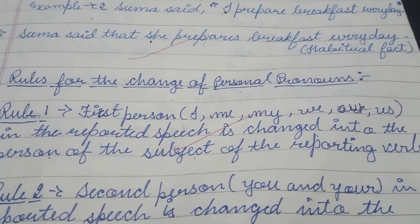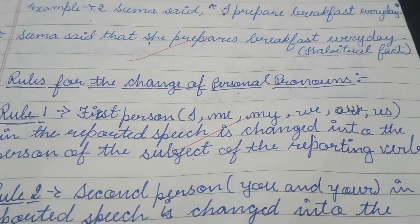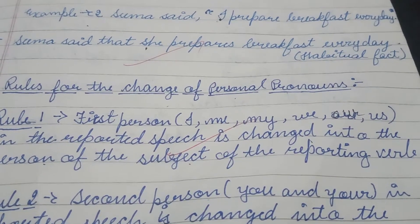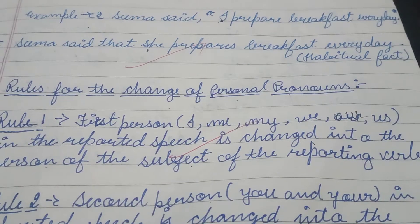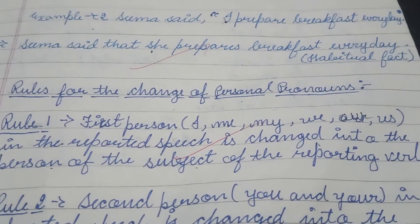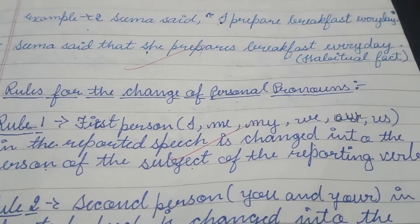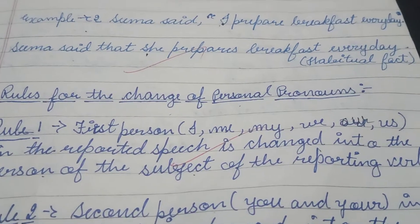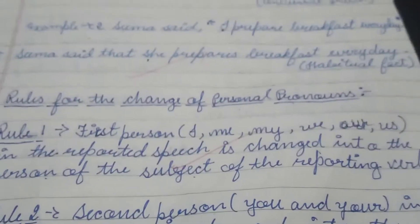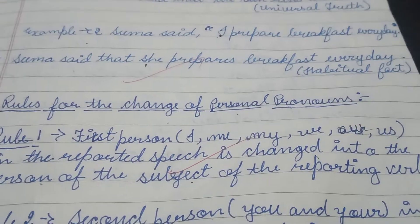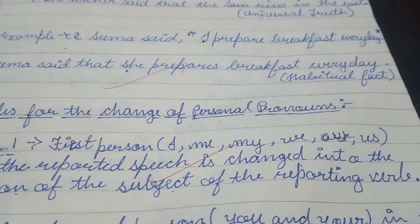If we have first person in the reported speech — that is I, me, my, we, us, etc. — then it is changed into the person of the subject of the reporting verb. Now we know in a statement, we have the reporting verb as the first part and the reported speech as the second part.